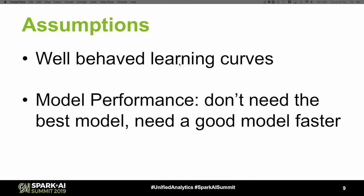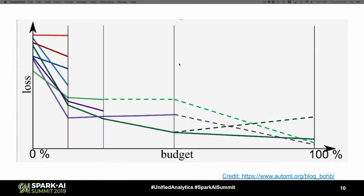There are some assumptions that go with this method, especially when using naive random search as the initial candidate set and then successive halving. One assumption is that you have well-behaved learning curves. If your loss curves stagnate, you may terminate something that would ultimately perform very well. The other component is that because your initial candidate set was randomly selected, you're trading performance just to get something faster, because you don't actually know how things would have continued had you trained them all the way through. It's possible that some eliminated configurations ultimately would have converged to better performance, or they might have diverged completely.